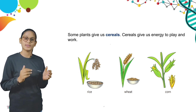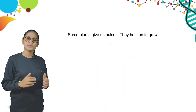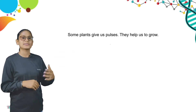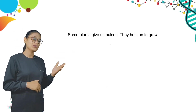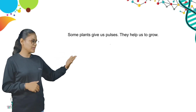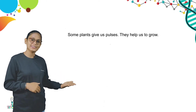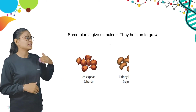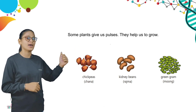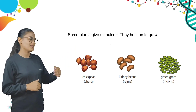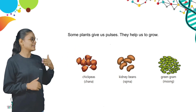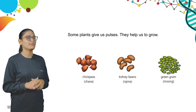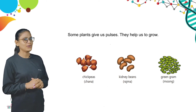Now we discuss about pulses. Some plants give us pulses. They help us to grow. Examples are chickpeas, kidney beans, and green gram. In Hindi, chickpeas is chana, kidney beans is rajma, and green gram is moong. Everyone knows about them now.